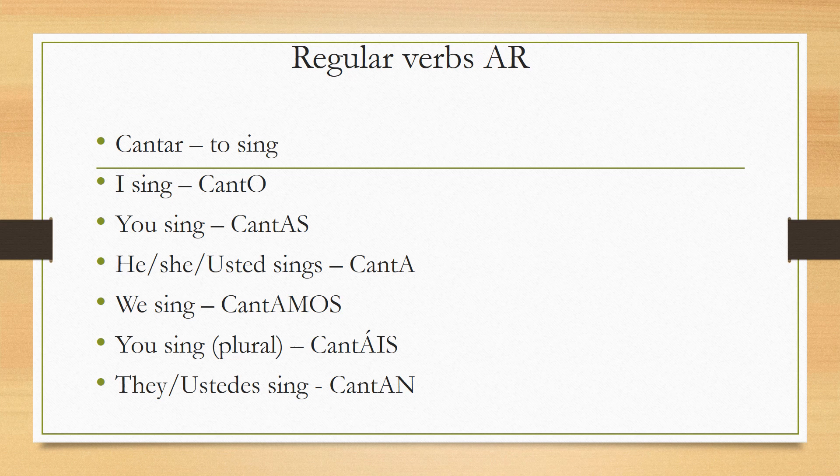For 'we,' the ending is AMOS — so 'we sing' is 'cantamos.' For 'you plural' (talking to a group), the ending is ÁIS — so 'you all sing' is 'cantáis.' And for 'they' or 'ustedes' (the plural formal form), the ending is AN — so 'they sing' is 'cantan.'